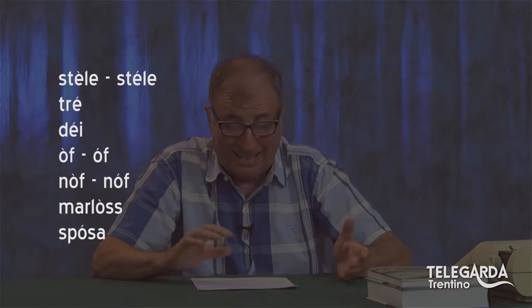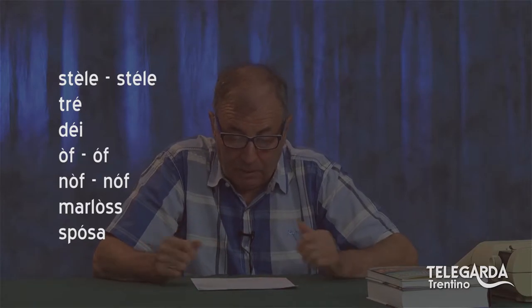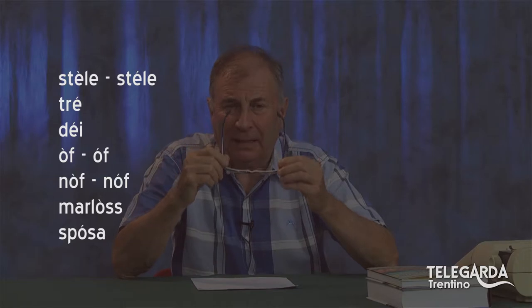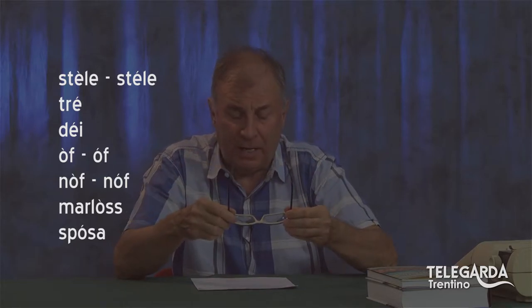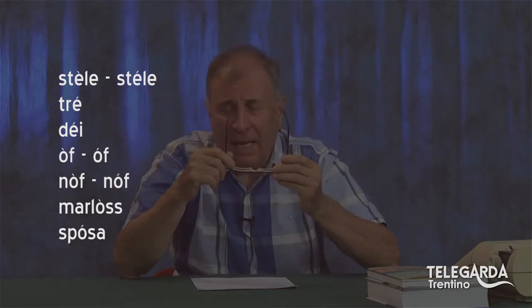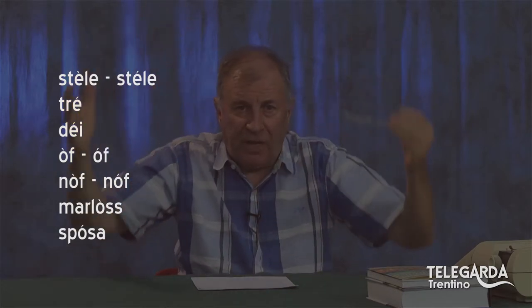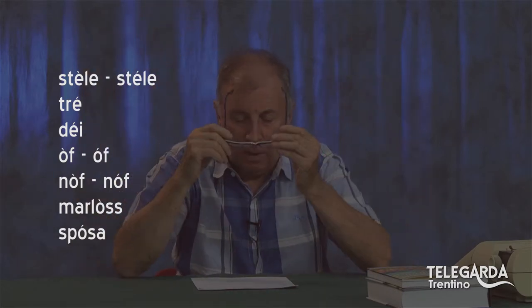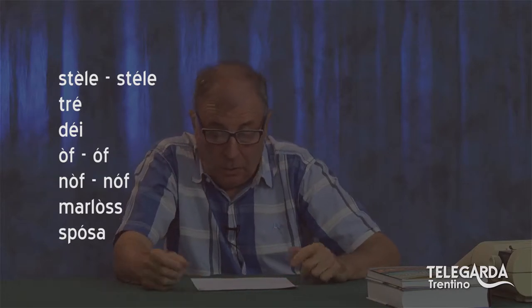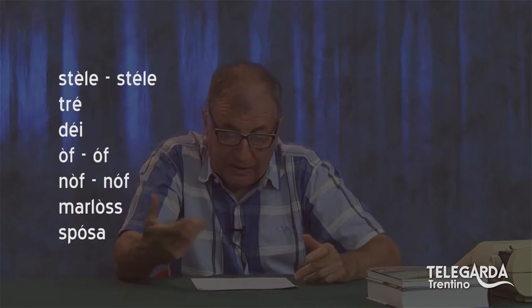Andiamo all'accento fonico. La famosa parola stèle e stéle: stèle con la E aperta sono i ciocchi di legna, quelli che si impilano. Qualcuno ci fa anche dei disegni. Invece stéle, con la E chiusa, quindi con l'accento fonico chiuso, sono le stelle.